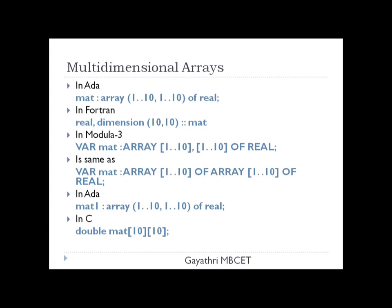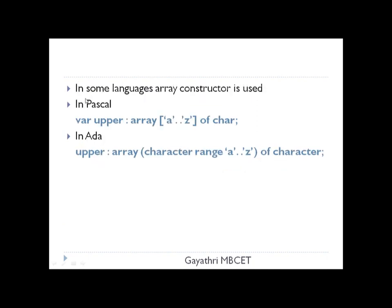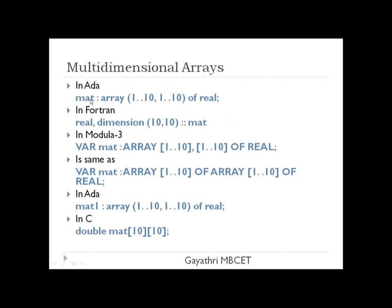Now, how to declare multidimensional arrays. In Ada, the array name is 'mat', which is declared as an array with two dimensions. Both dimensions — row and column — start from 1 to 10. The array elements are of type real.